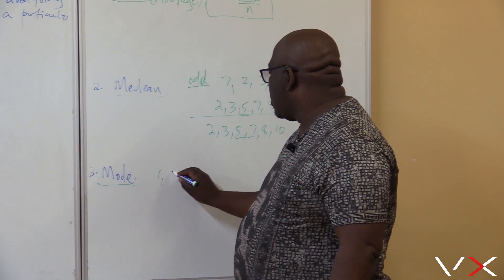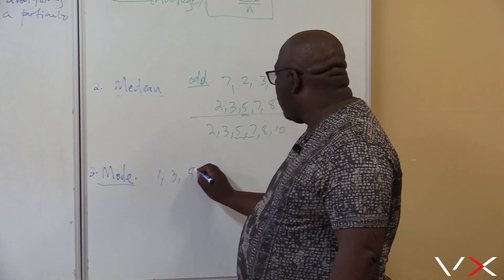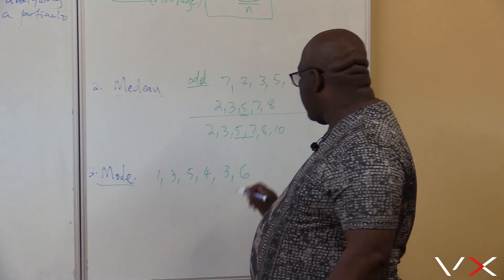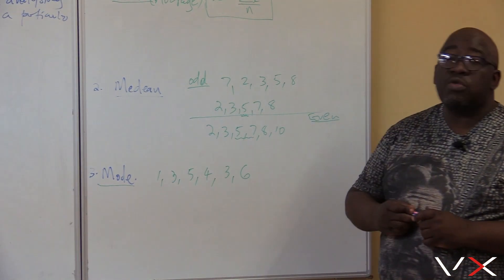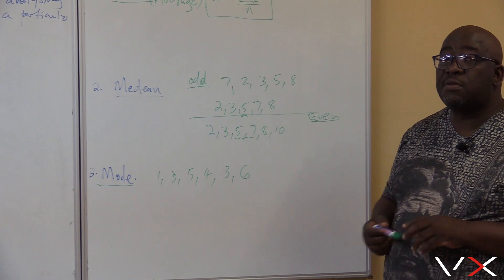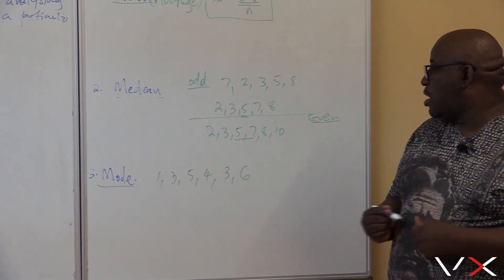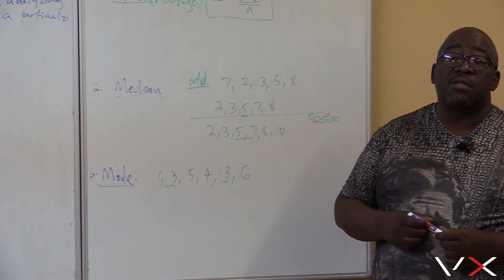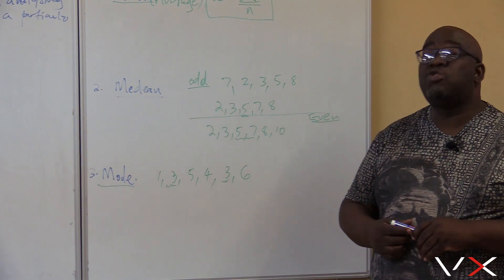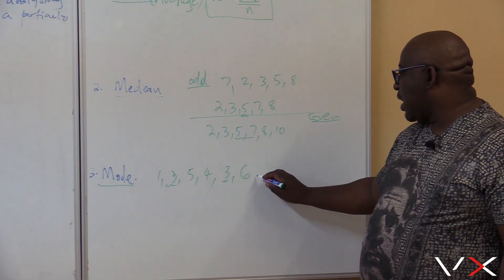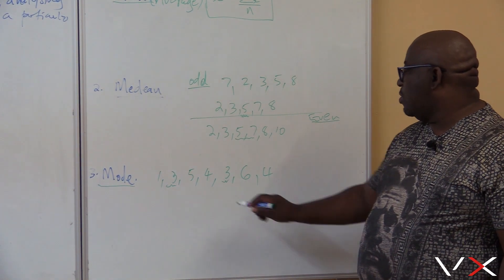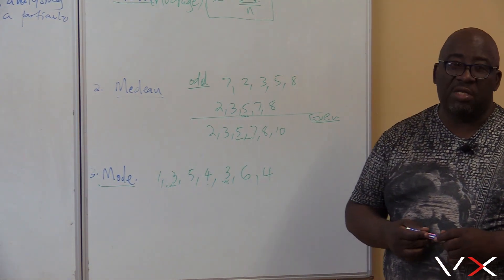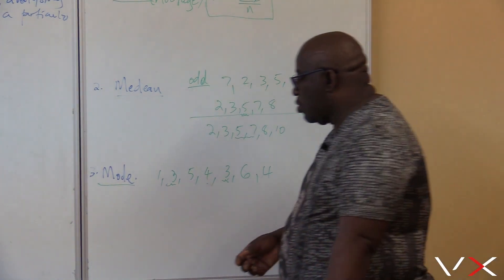Let's make an example to understand what the mode is. If I've got 1, 3, 5, 4, 3, 6, this is my data. What is the mode of this data? You look at the data that appears the most. In this particular case, it is 3. So the mode of this data is 3. But at times, you can find 2 modes. We call that data bimodal. If I can have 4 again here, you'll see that the mode will be 3, 3, 4, 4. So this data will be bimodal. So that's what a mode is.